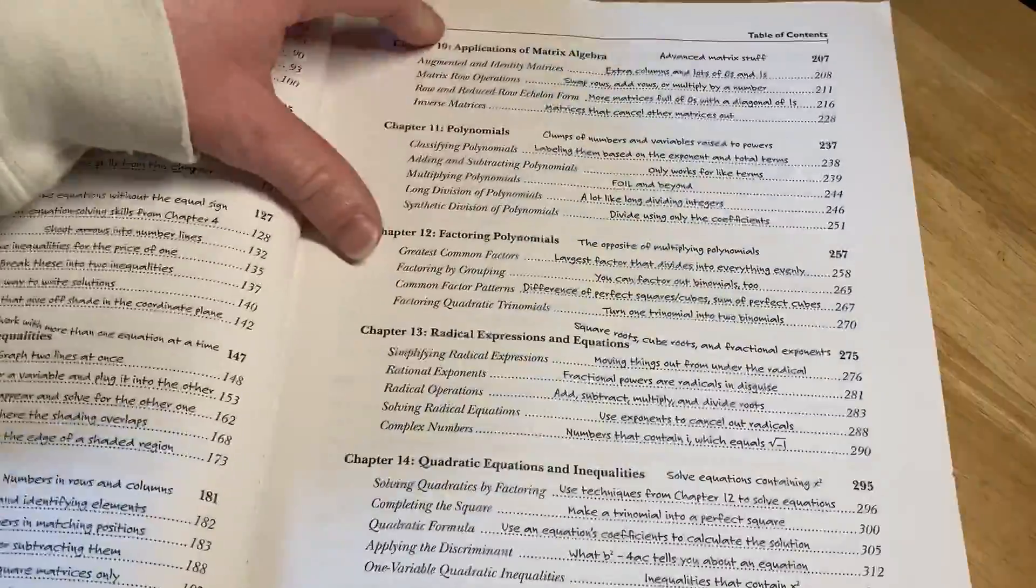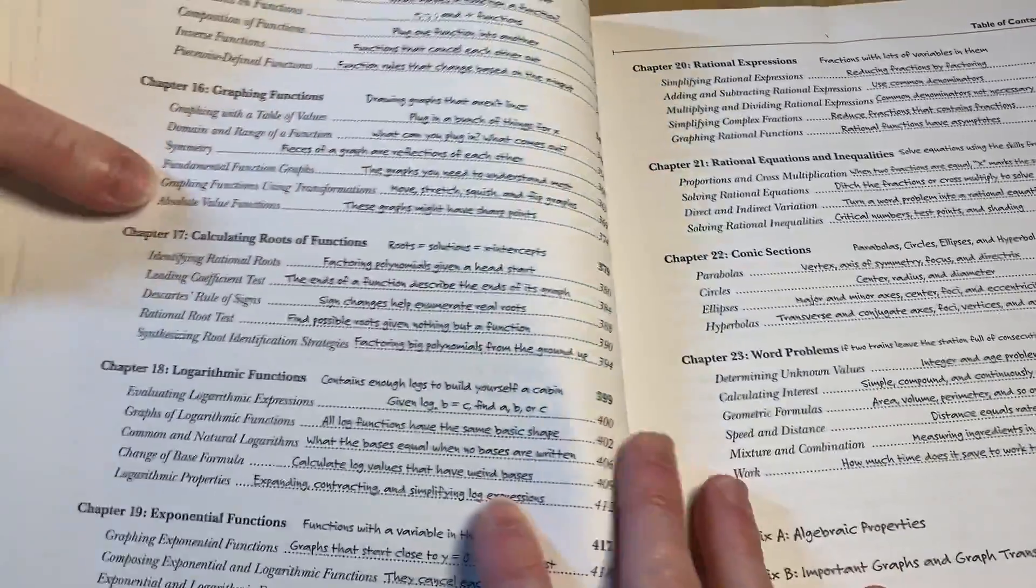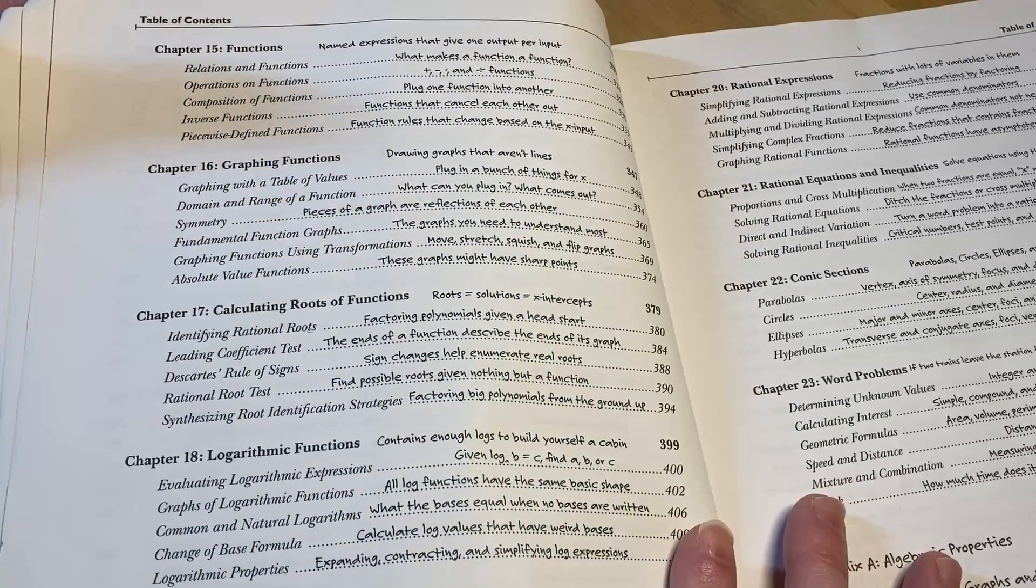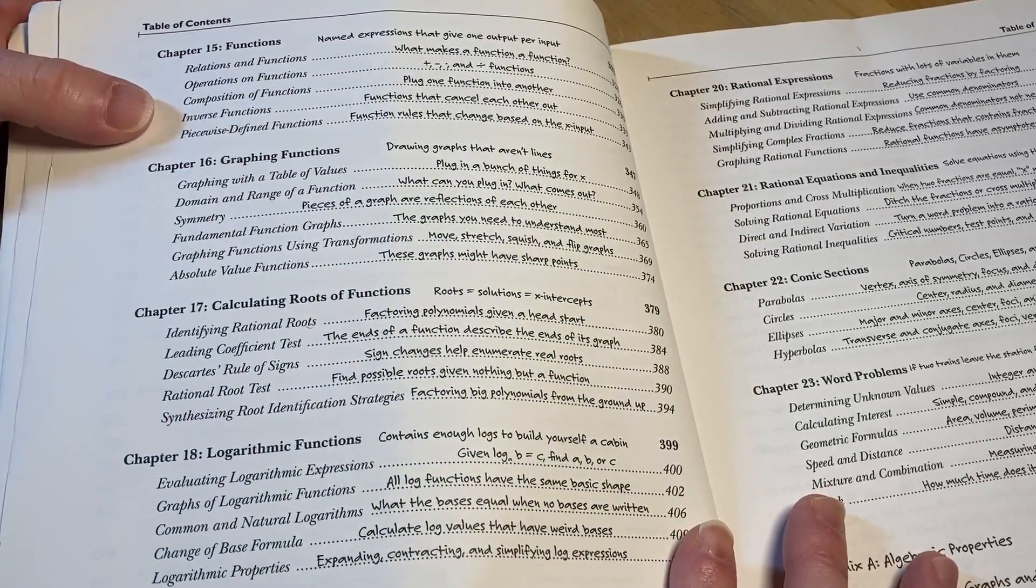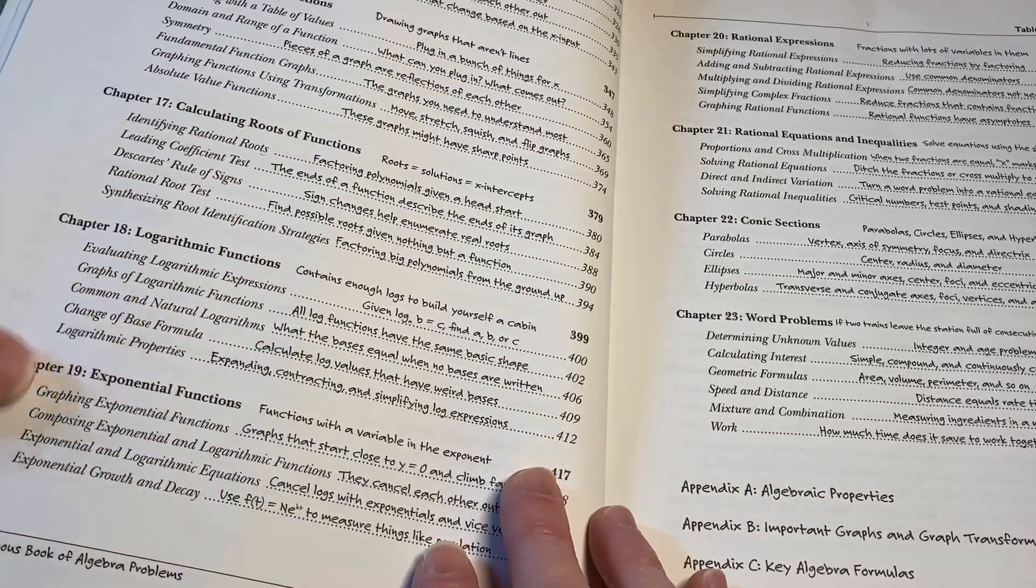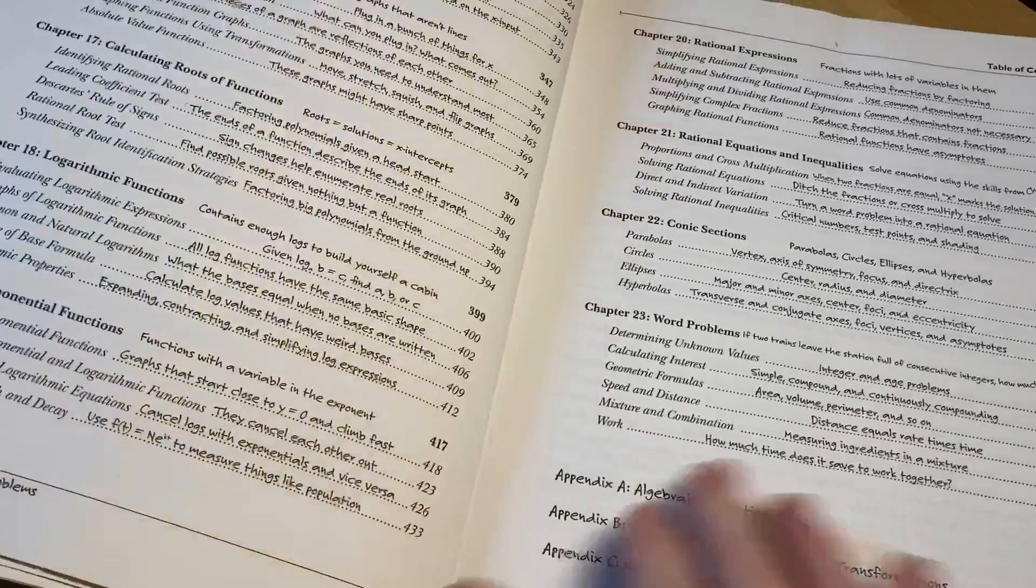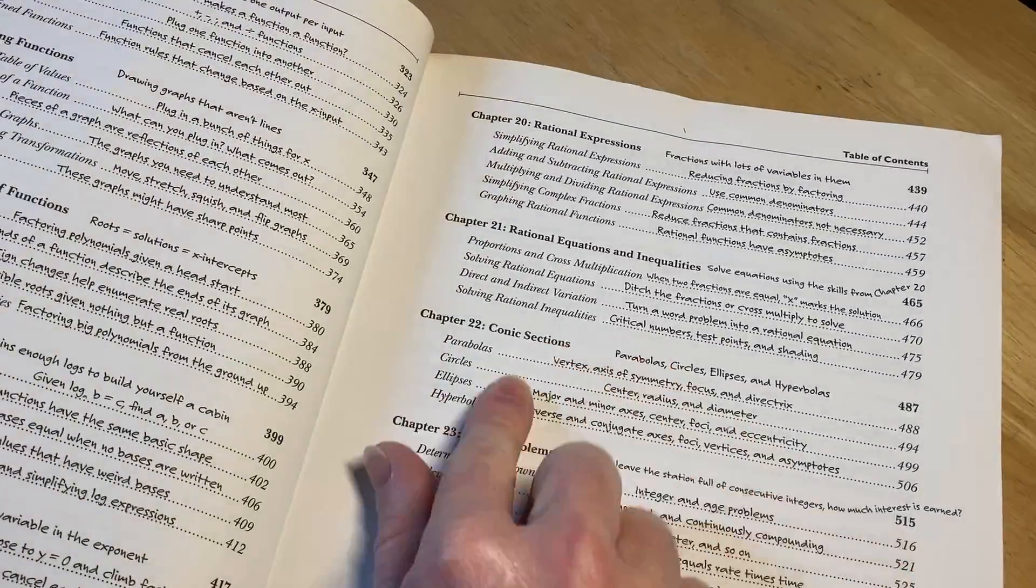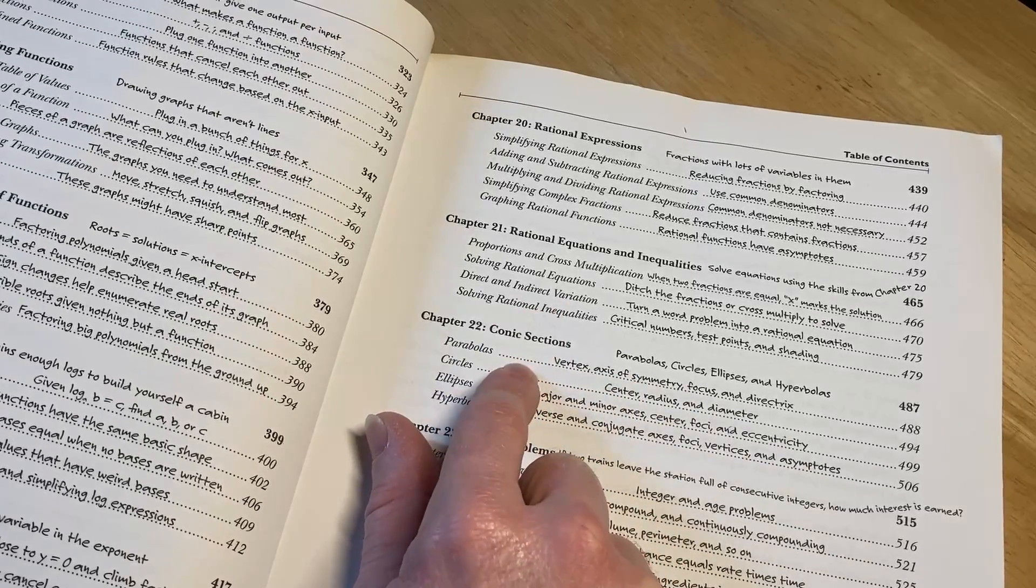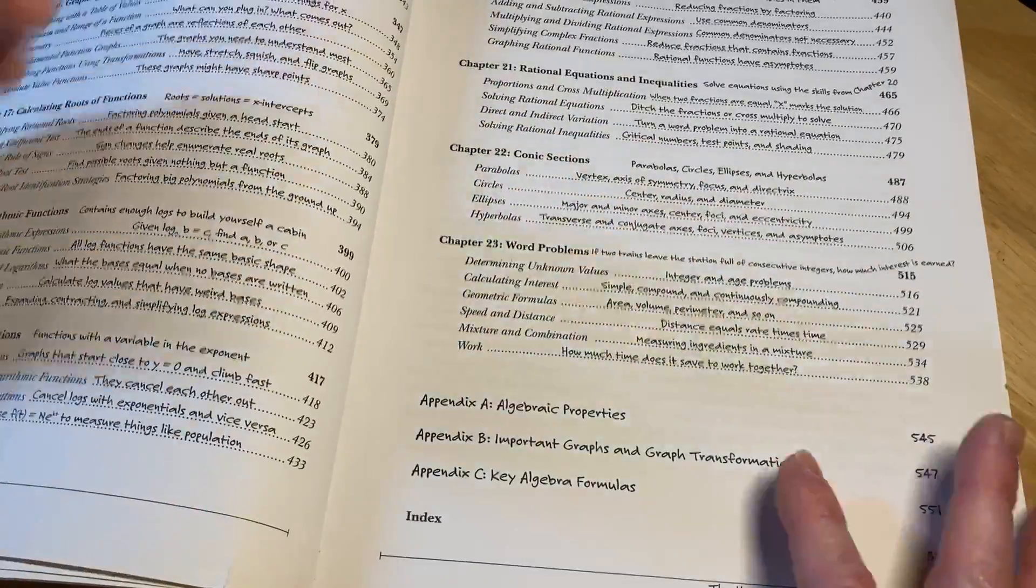Here's more topics: matrix operations and calculations, applications of matrix algebra, polynomials, factoring polynomials, radical expressions, quadratic equations and inequalities. One thing I don't like about this book is this weird font. I'm not a big fan. The book's trying to be fun with fun fonts, which is okay. I have other books like that, it's just not for me.